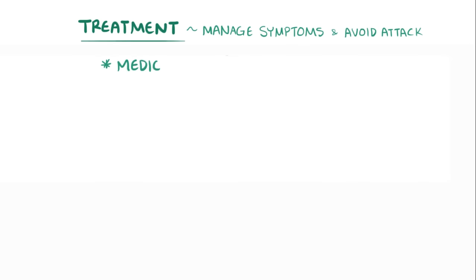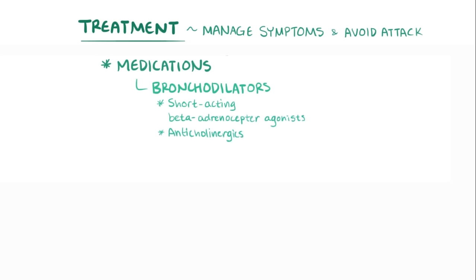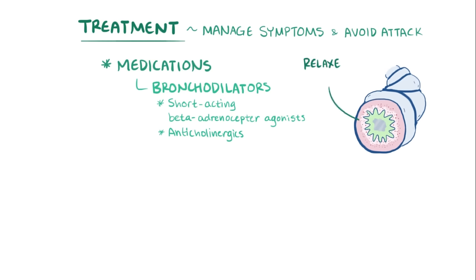There are also a number of medications that can reduce the symptoms of asthma. Bronchodilators, like short-acting beta-adrenoceptor agonists, and anticholinergic medications are often administered through emergency inhalers. These fast-acting medications cause the smooth muscles in the lungs to relax and therefore dilate the airways, opening them up so that the person can breathe.